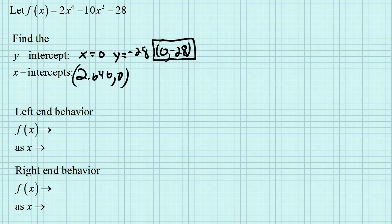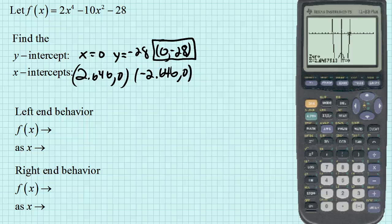So 2.646 is one of them. This graph is symmetric with respect to the y-axis. The opposite is the other guy. You can verify it using the calculator, but that will be the other one, -2.646. So we have the intercepts.